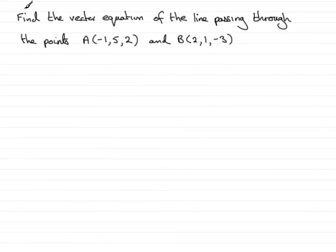In this question, we're asked to find the vector equation of the line passing through the points A, which has coordinates (-1, 5, 2), and another point B, which has coordinates (2, 1, -3). Now, in order to do this, what I'm going to do is just draw a diagram.